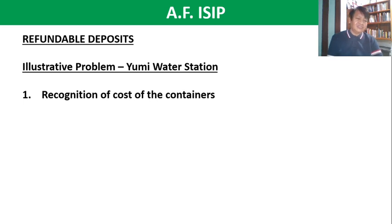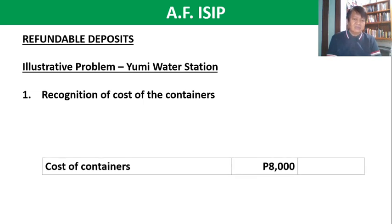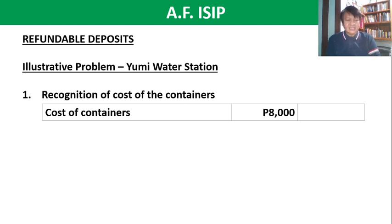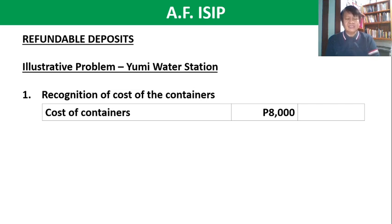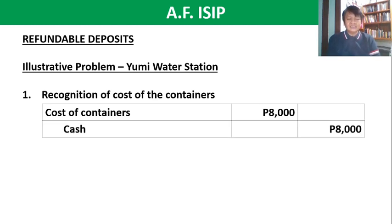For requirement number one, recognition of cost of the containers: debit cost of containers 8,000 pesos, credit cash 8,000 pesos. The account title may vary depending on the company, but in this case we use cost of containers. This is an expense account and will be included in the income statement.